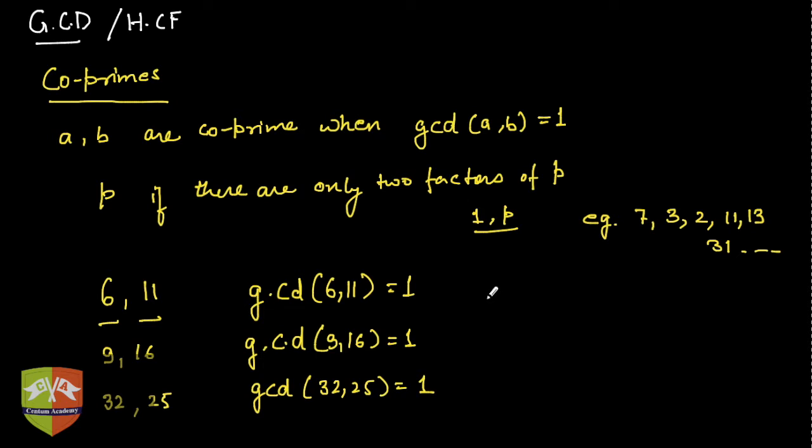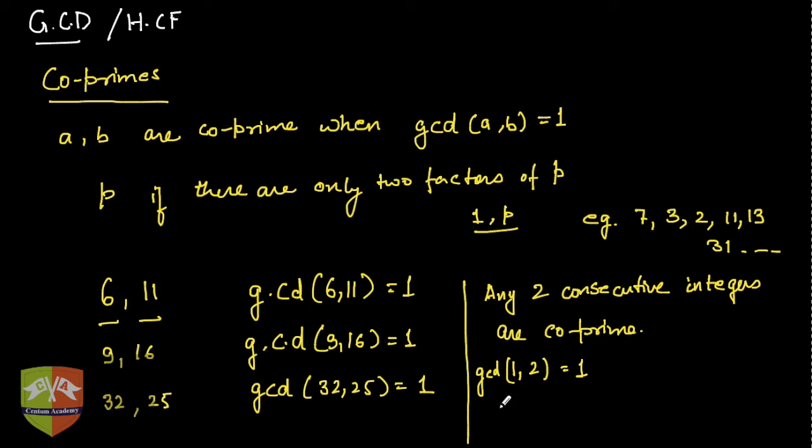There is an important observation in case of positive integers: any two consecutive integers are co-prime. You can check for yourself. Examples: gcd(1,2) is 1, gcd(9,10), both composite but still one.